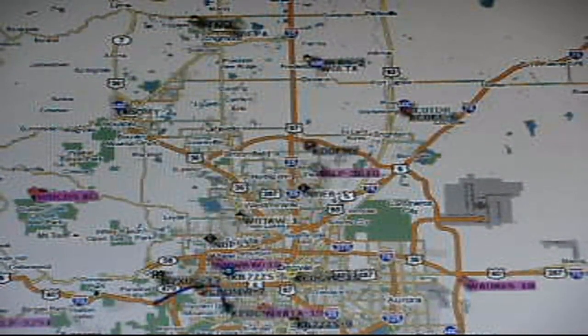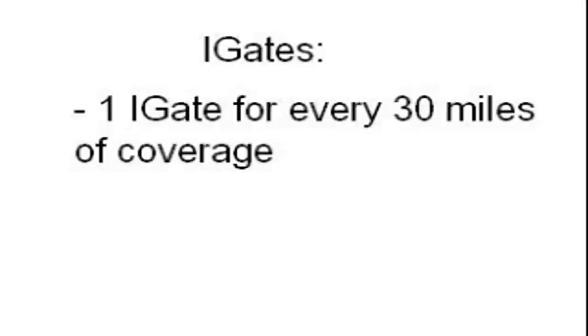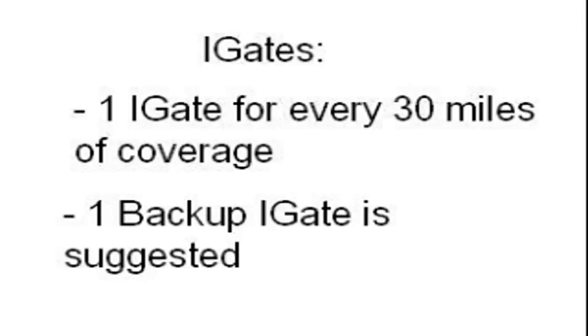Here is a map of Denver, Colorado and the surrounding area. Notice the iGates that are currently in operation, and also note the special map icon they receive. While iGates do play an important role in the APRS system, not everyone should plan on setting up their APRS station to function as an iGate. In general, you should have only one iGate and one backup iGate station for every 30 miles of coverage. Having too many iGates in a small area can do more harm than good, as it generates unneeded internet traffic. Check with other APRS users in your area before setting up an iGate station.